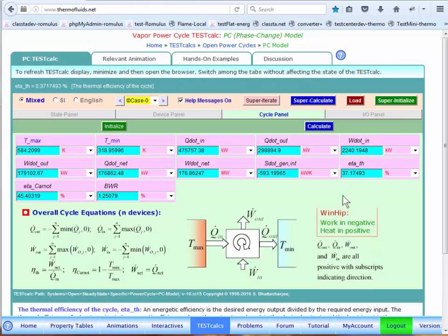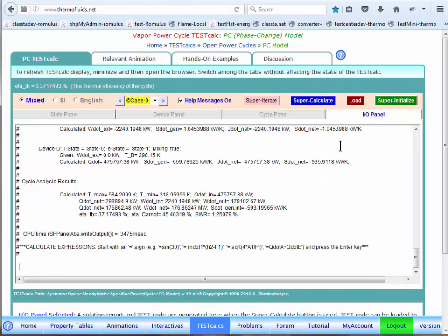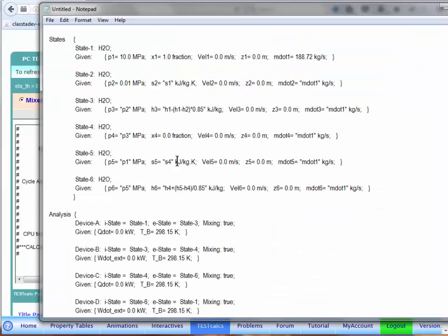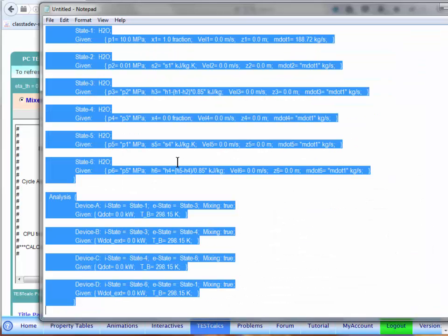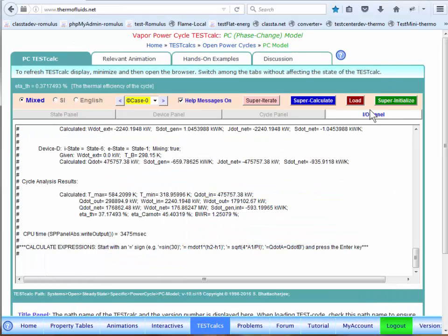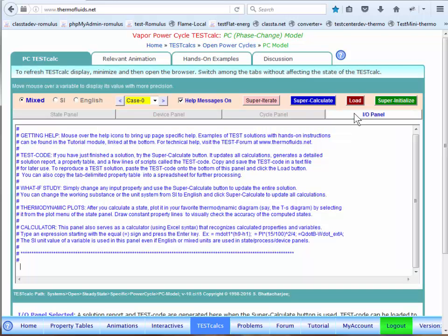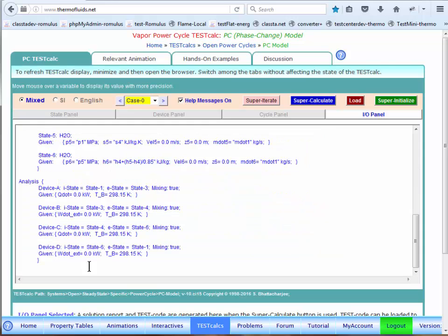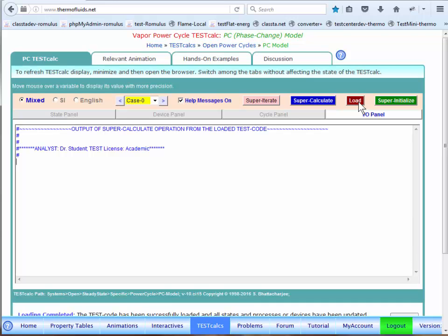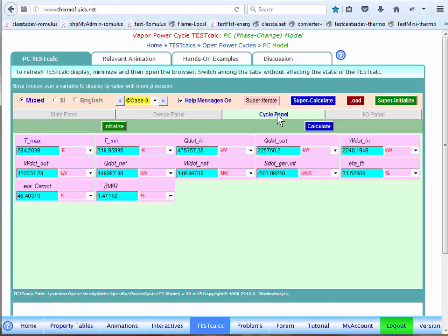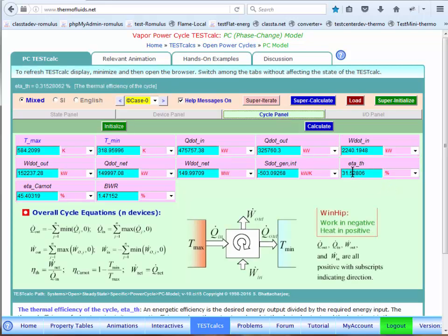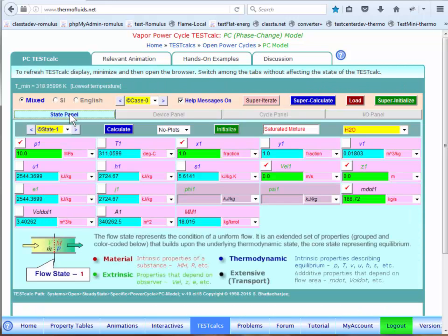One last thing. Remember, we generated the test code, and I actually saved it on a notepad for this problem. I'm copying the test code to show how solutions are regenerated. Let's superinitialize. That means the TESTcalc has no memory of any solution. We come here in the I.O. panel, and we just paste the test code and click the load button. The original solution is going to be regenerated in a second. You can go to the cycle panel. You recall that 31.5% was the original thermal efficiency of the cycle. So, we got back the solution. If you have the test code, you can quickly regenerate the solution and perform different what-if studies.